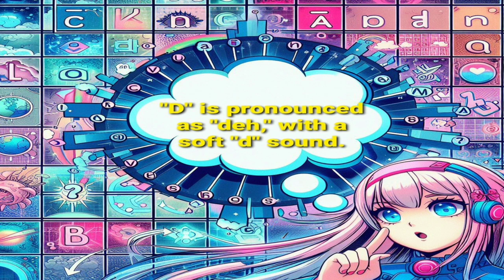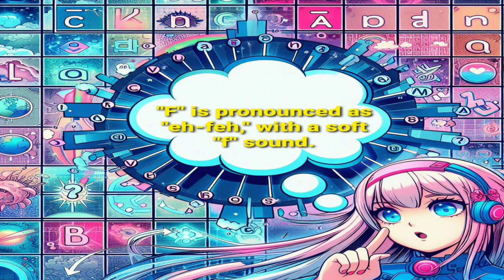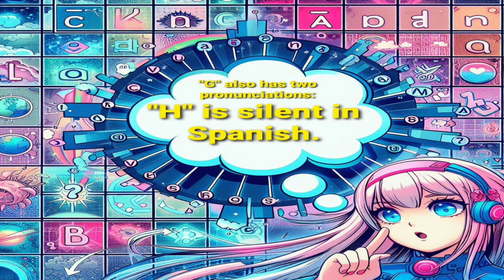D is pronounced as 'de', with a soft d sound. E is pronounced as 'eh', similar to the e in bed. F is pronounced as 'efe', with a soft f sound. G also has two pronunciations: before e or i, it sounds like the h in hot, while before a, o, or u, it sounds like g in go.